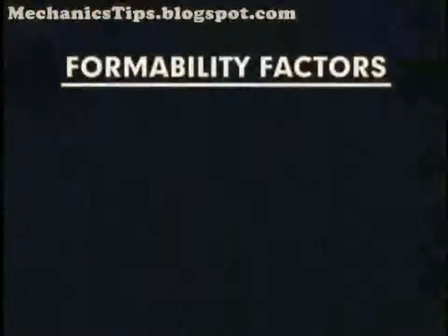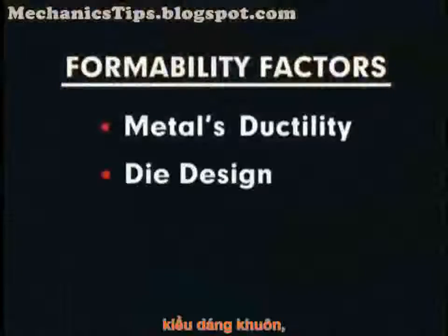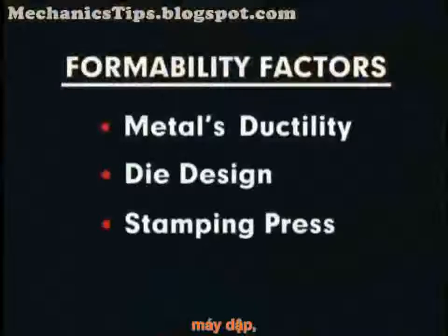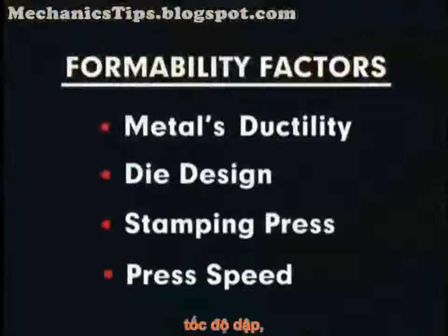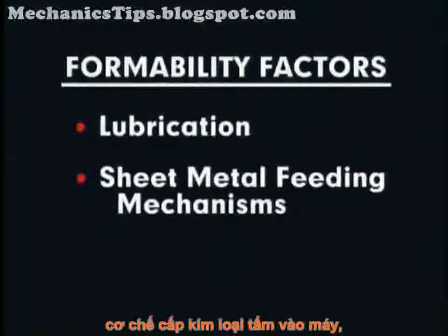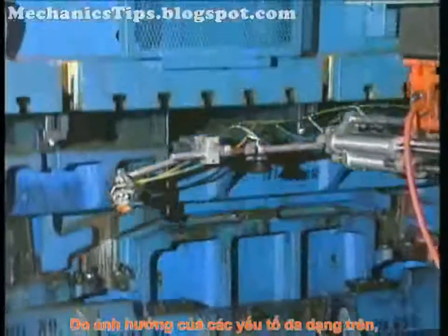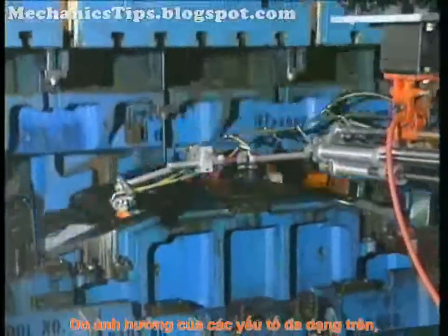Those factors include the ductility of the metal, the die design, the stamping press, press speed, lubrication, the sheet metal feeding mechanisms, and monitoring systems and controls which safeguard and synchronize the operation. Because of these various factors, formability differs from one part or operation to the next.